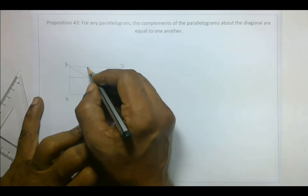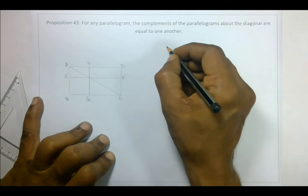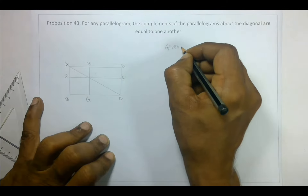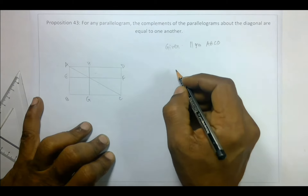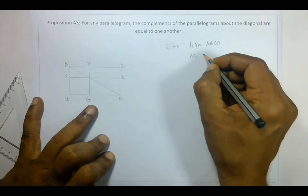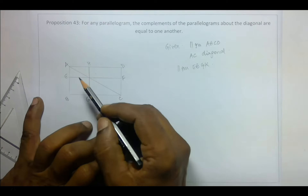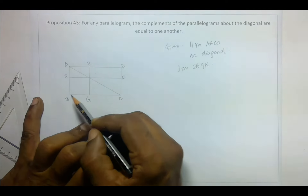So let's say the points are labeled A, B, C, D, E, F, G, H, K. Given is parallelogram ABCD, AC is the diagonal, parallelogram EBGK and parallelogram HKFD are the complements along the diagonal AC.